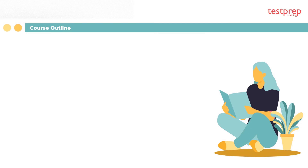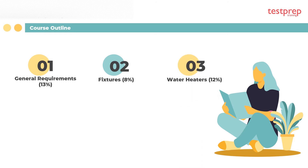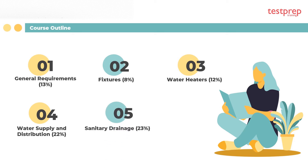The course outline includes: one, general requirements at 13% weightage; two, fixtures at 8% weightage; three, water heaters at 12% weightage; four, water supply and distribution at 22% weightage; five, sanitary drainage at 23% weightage; six, vents at 22% weightage.